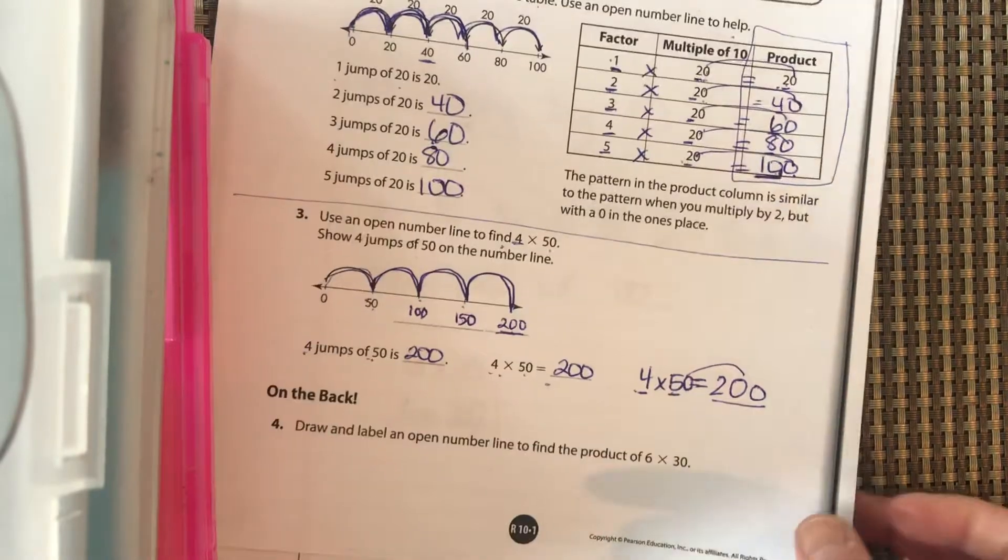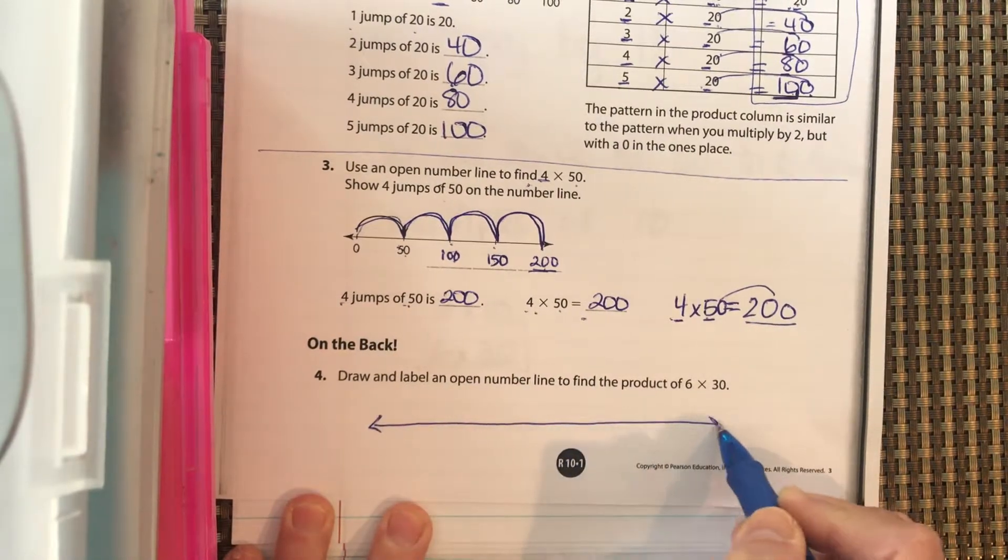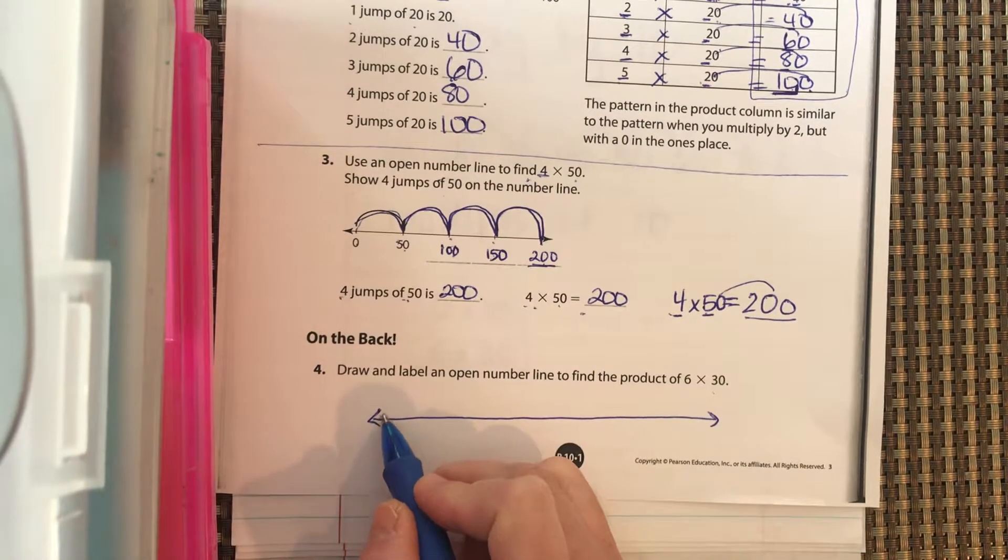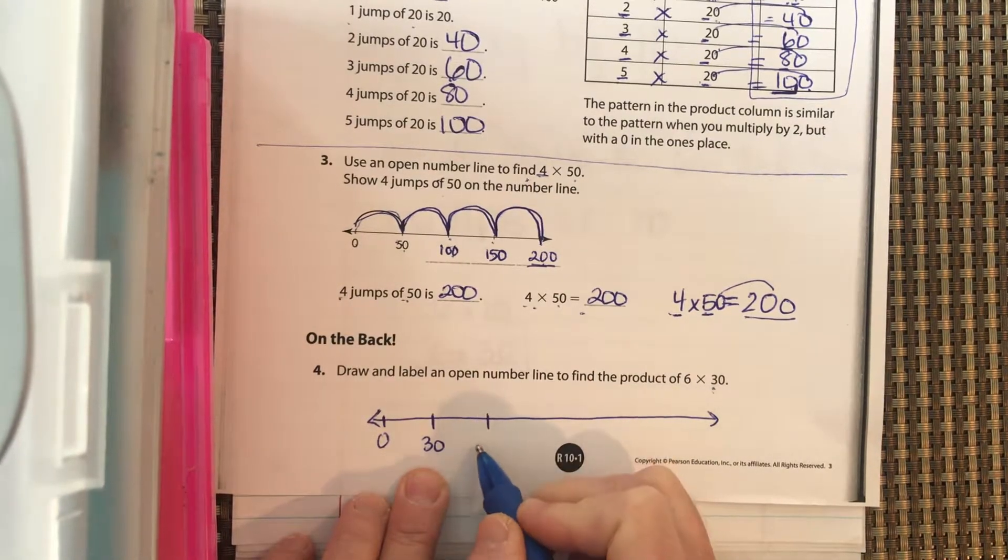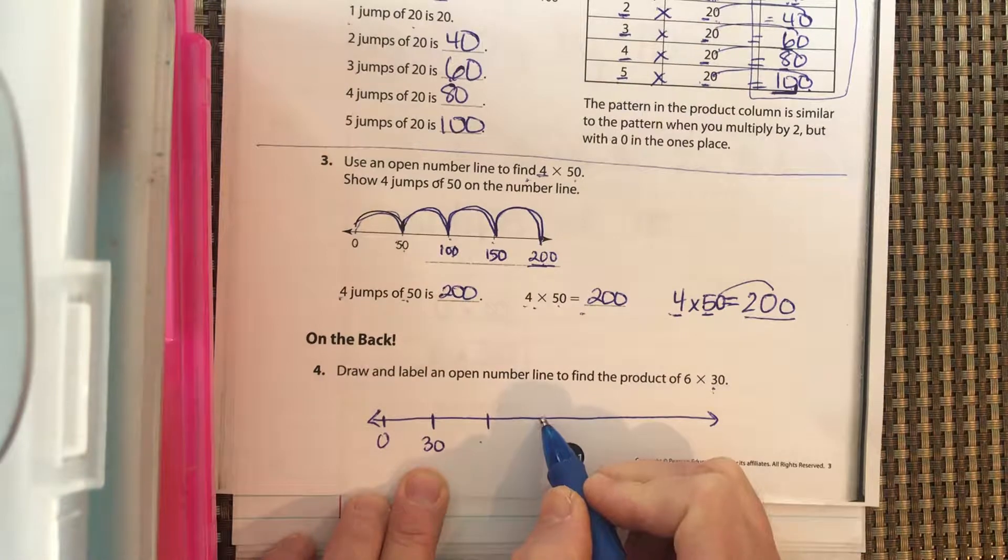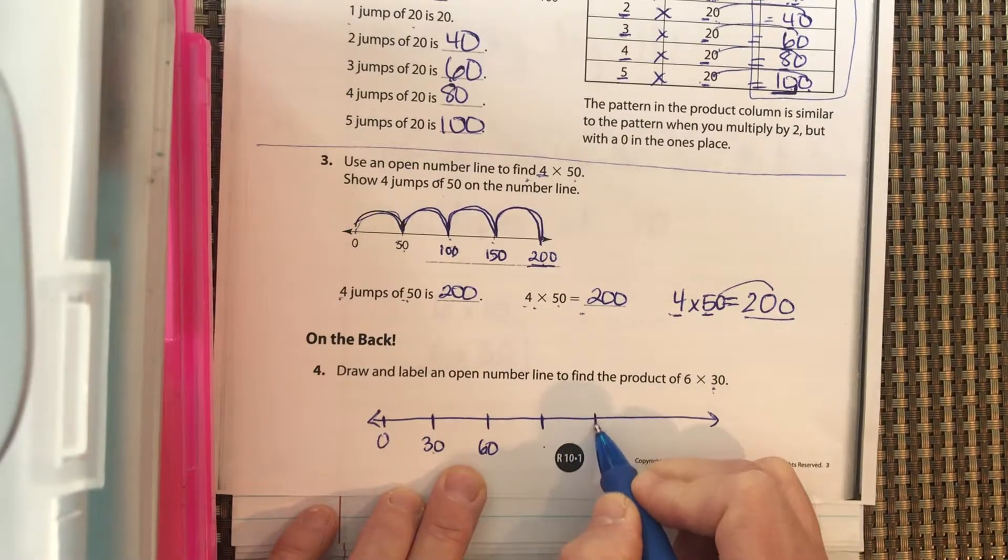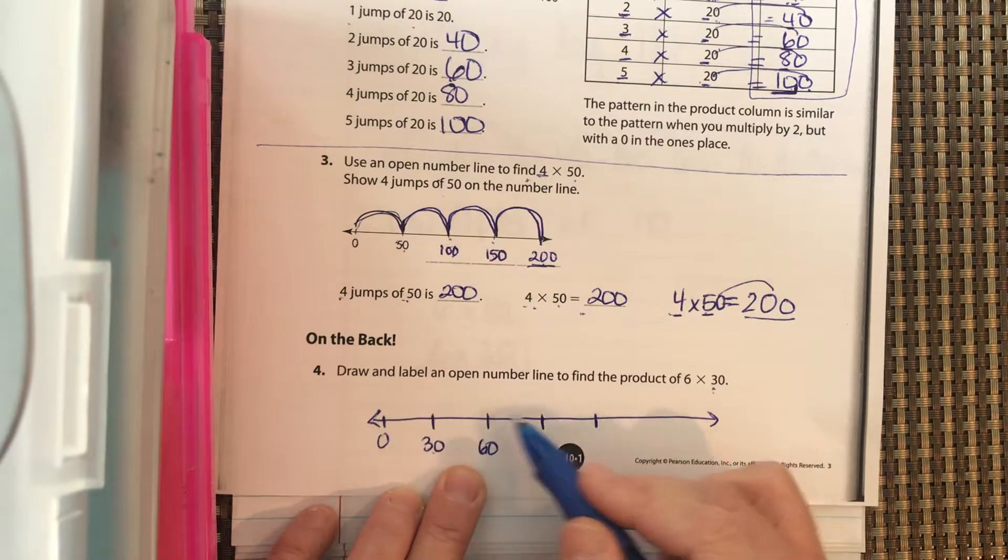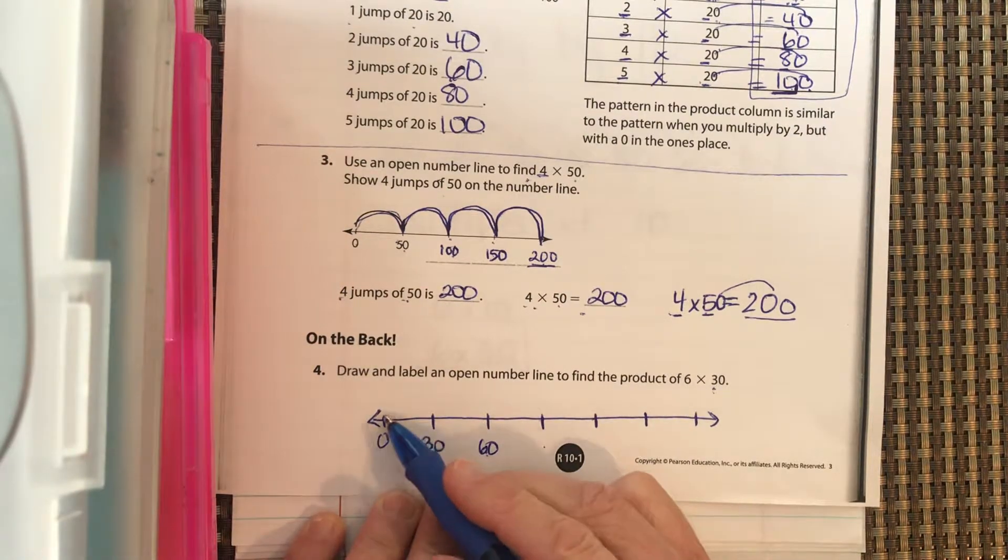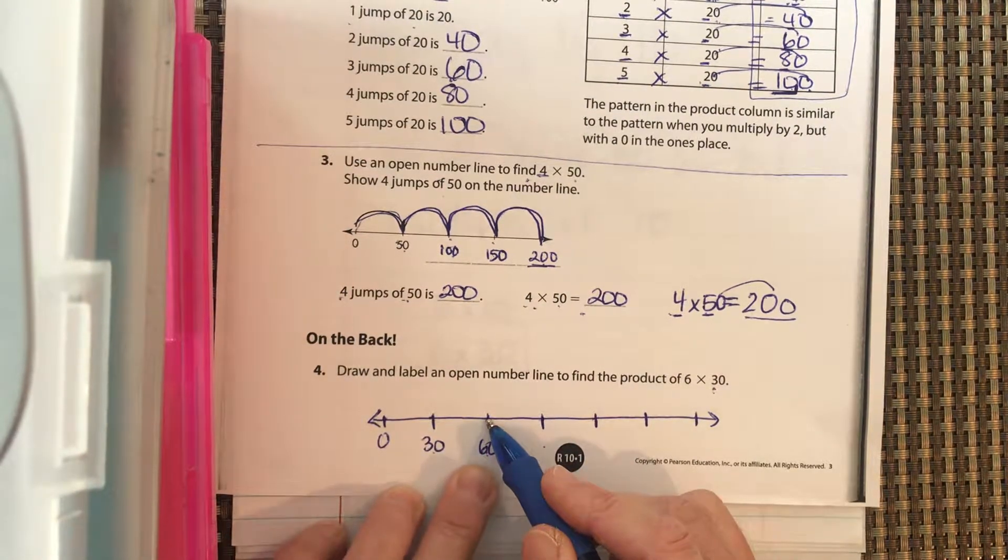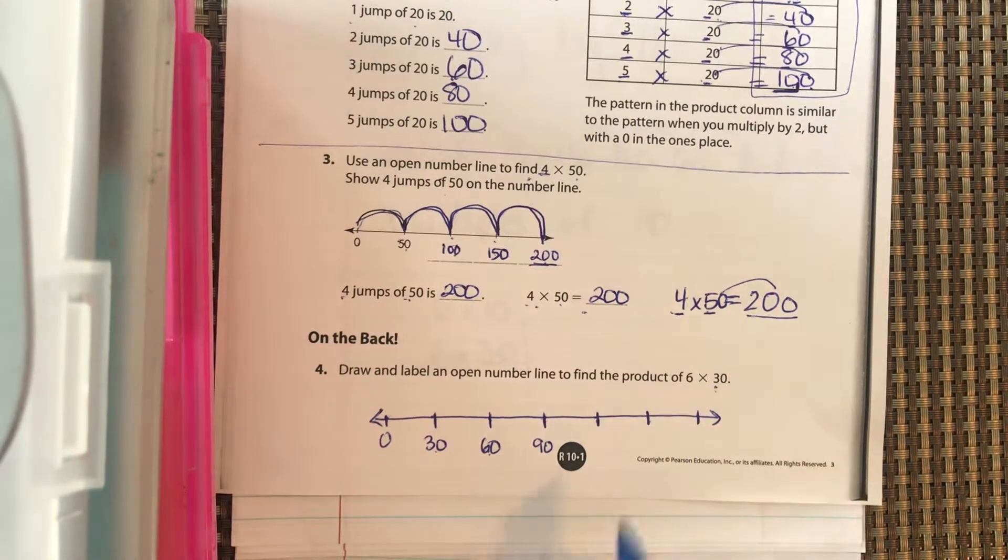Draw and label an open number line to find the product of 6 groups of 30. Open number line just means it keeps going in both directions. So we're going to count by 30. So we just start at 0. Our first hop is going to be 30. Let's count by 30. So we got 30. What should come next? 60, right? 30 plus 30 is 60. We need to add another 30 right here. See if you can fill those in. You're counting by 30. So 0 plus 30 is 30. Plus 30 is 60. 60 plus 30 is 90. See if you can add 30 more, 30 more, 30 more. Pause it. Fill those in and then come back.